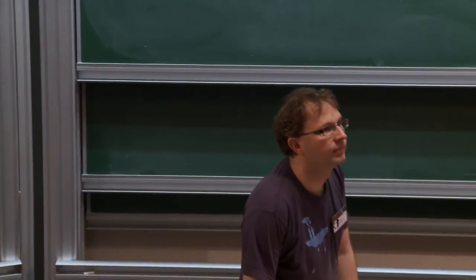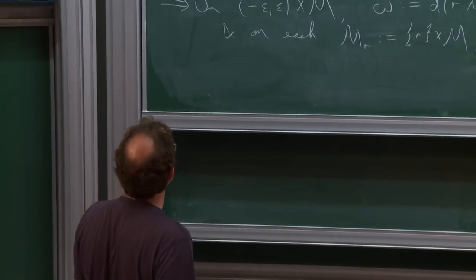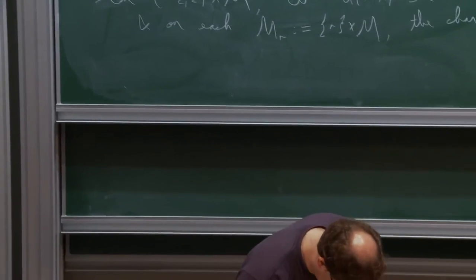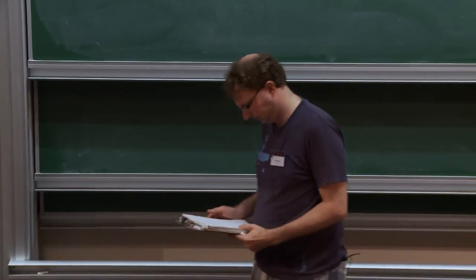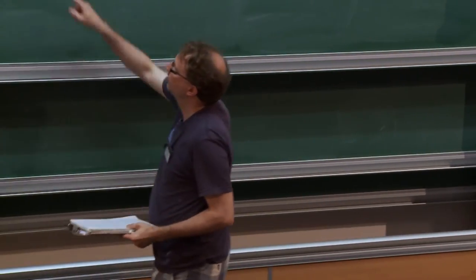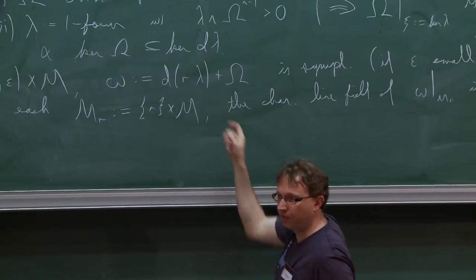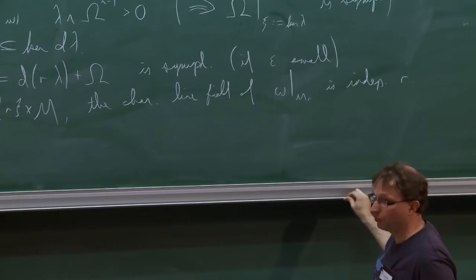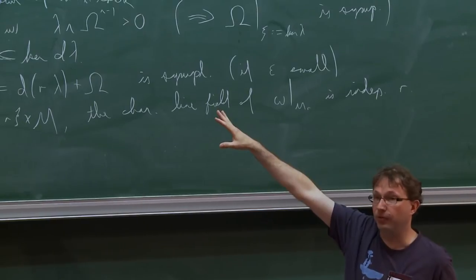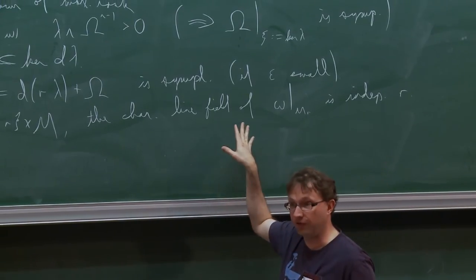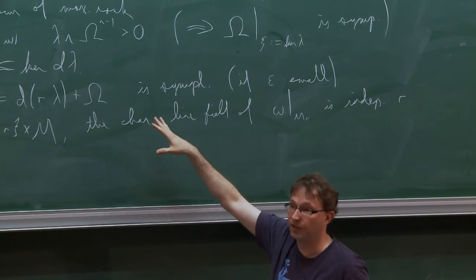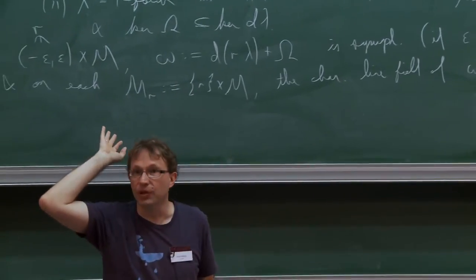Audience: What do you mean by the first symbol of the last line? Speaker: That's an ampersand — an 'and.' So it's in order to get the stable condition that you want — this last condition that the kernel of omega is contained in the kernel of d lambda — that's what implies this fact about the characteristic line fields? Exactly. And conversely, if you are given a one-parameter family of hypersurfaces that has this property — this stability of the characteristic line field — then you can always find a stable Hamiltonian structure that produces that. So that's kind of an exercise using the Moser deformation trick.